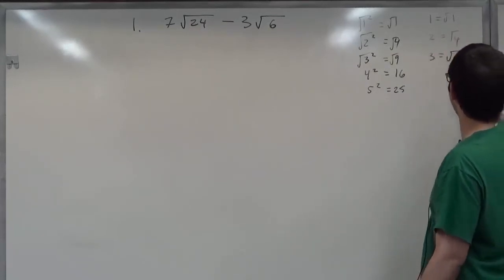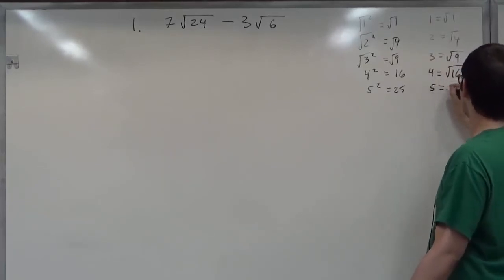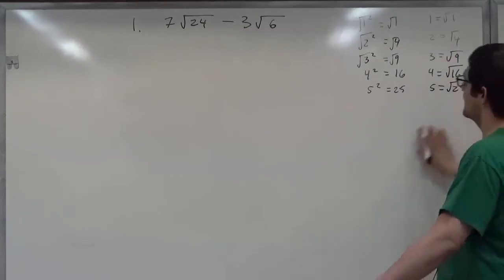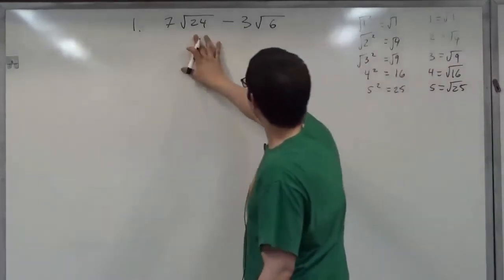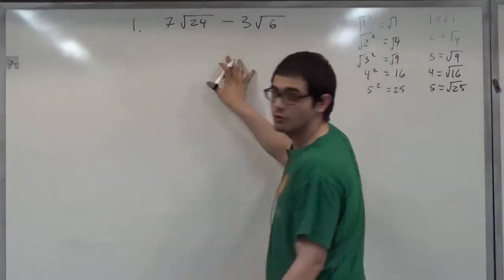Three equals the square root of nine, four equals the square root of sixteen, five equals the square root of twenty-five. Now we're going to break these down to see what we can find.